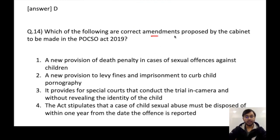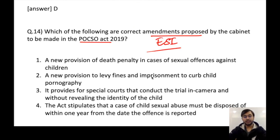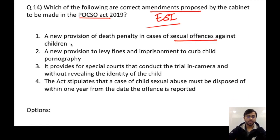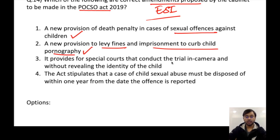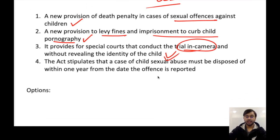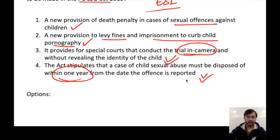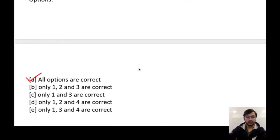Which of the following are correct amendments proposed by the cabinet in the POCSO Act 2019? A new provision of death penalty in cases of sexual offences against children — yes. A new provision to levy fines and imprisonment to curb child pornography — yes. It provides for special courts that conduct the trial in camera without revealing the identity of the child — yes. The act stipulates that a case of child sexual abuse must be disposed of within one year from the date the offence is reported — yes, also included. All options are correct, so the answer is A.